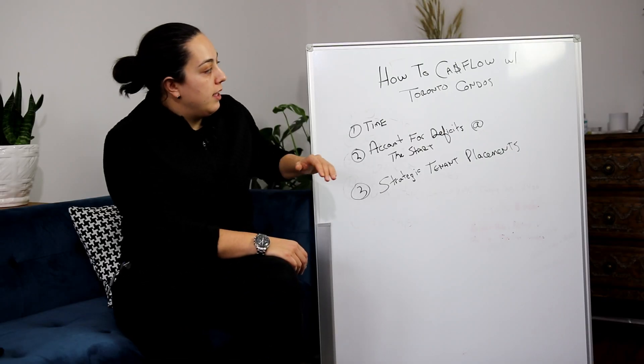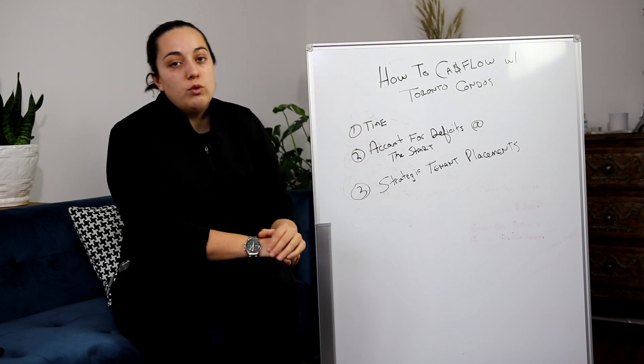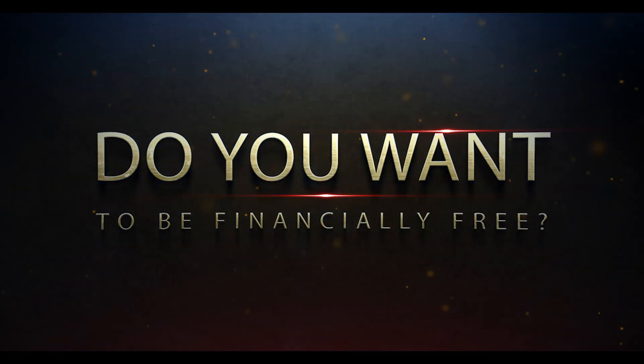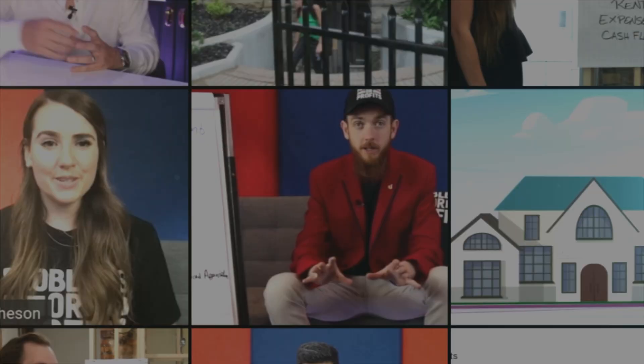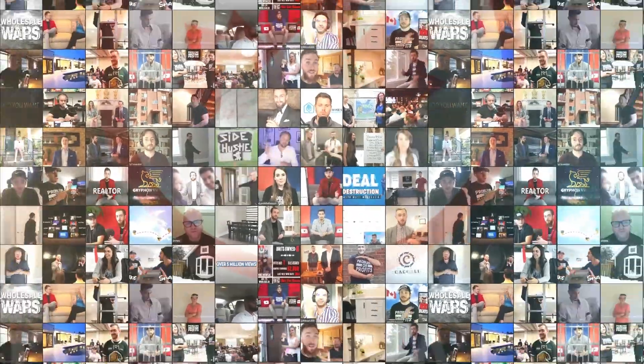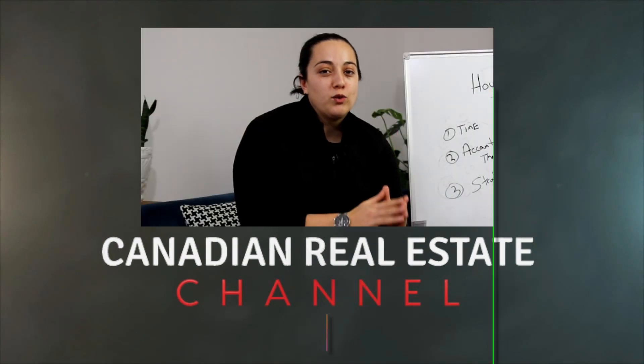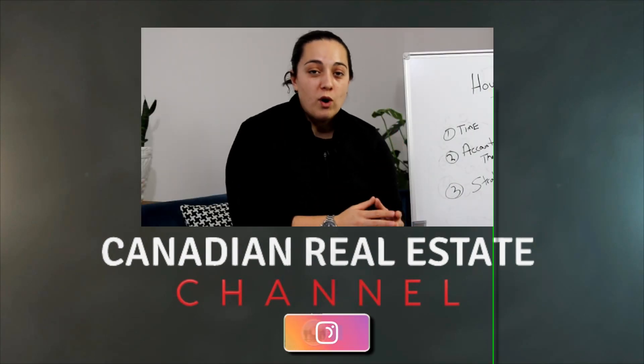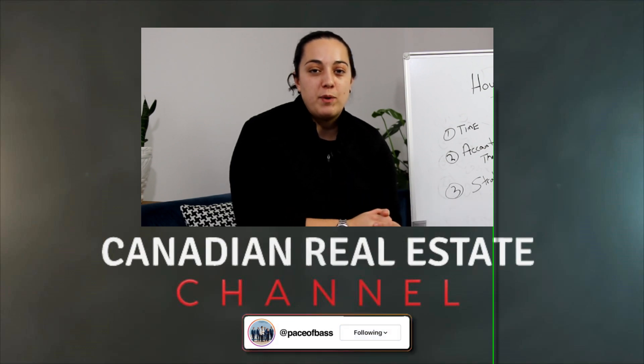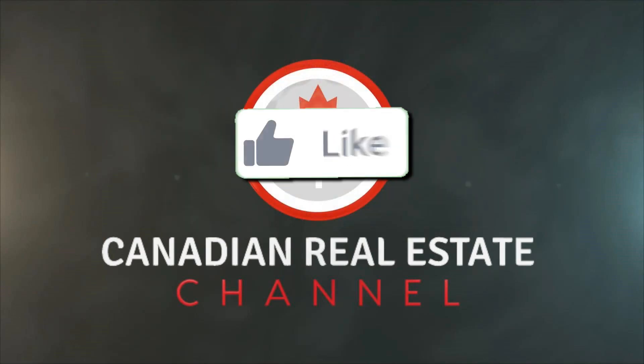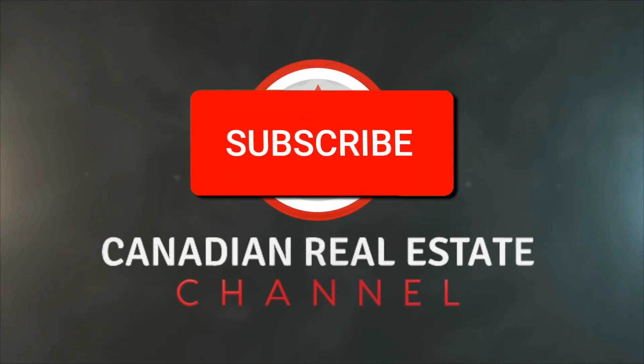The third thing goes to that second point, which is strategic tenant placements. We all know it can be very difficult to get a problematic tenant out of your property. One thing that I think to this point: we're not doing this in an unethical fashion, we need to do this in a very ethical way. And how do we do strategic tenant placements when you have several applications and you're likely to have more applications on condo A because it is more of a desirable condo than condo B?